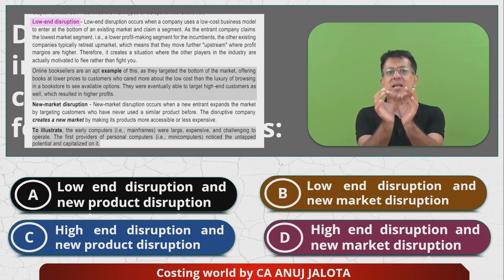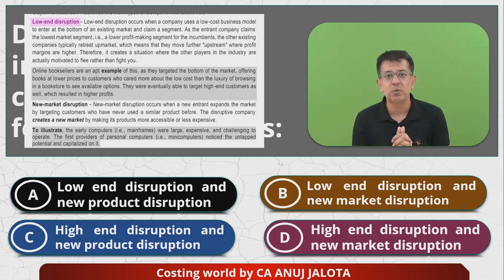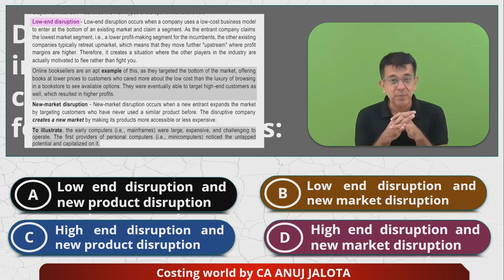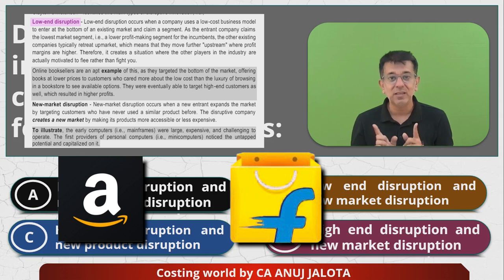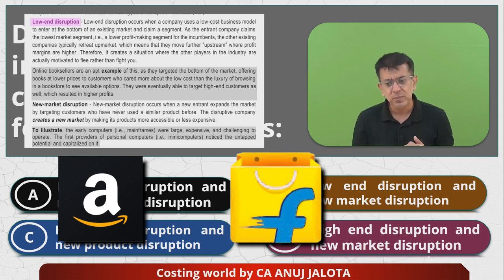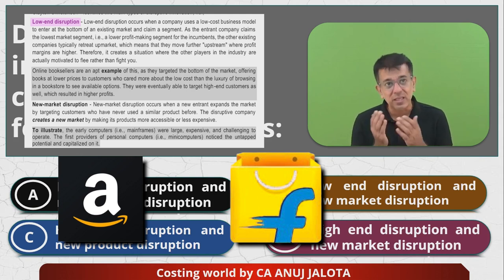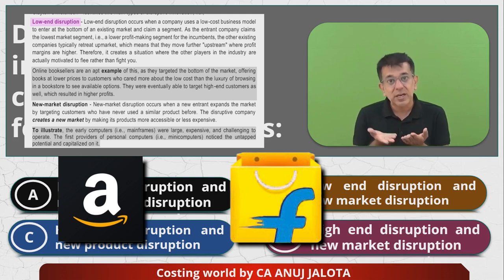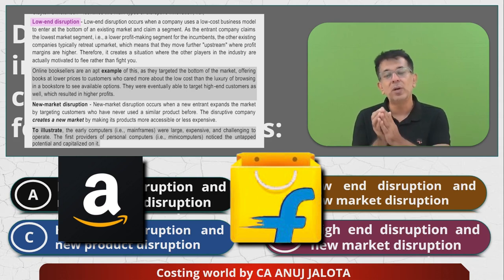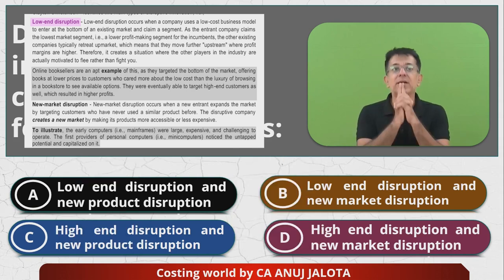One of the best examples that ICAI gives here, extracted from your modules: Flipkart and Amazon — in the beginning their models were very simple. They were selling books. Amazon was one of the first websites in the world selling books. Their advantage was they could sell books at a very cheap rate, entering the lowest market segment. That is called low-end disruption.